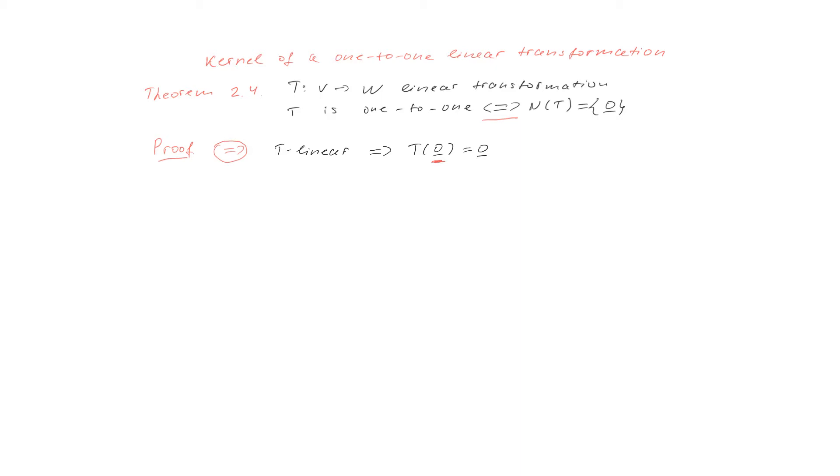However, we also know that T is one-to-one and from this we can conclude that there is no other non-zero vector x such that T of x is zero.